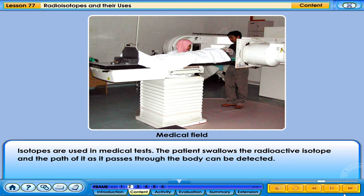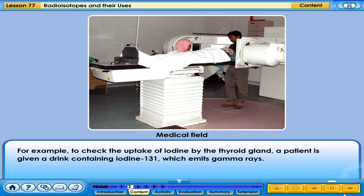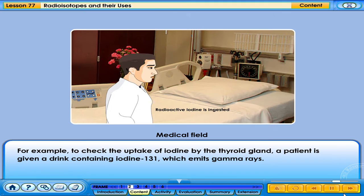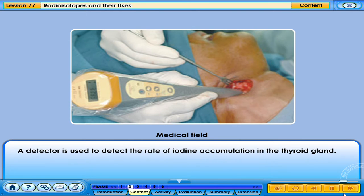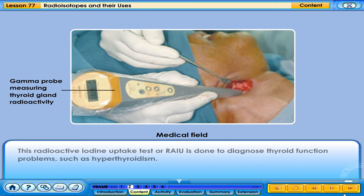Although radiation damages both cancer cells and normal cells, the normal cells are able to repair themselves and function properly. Isotopes are also used in medical tests — the patient swallows a radioactive isotope and its path through the body can be detected. For example, to check the uptake of iodine by the thyroid gland, a patient is given a drink containing iodine-131, which emits gamma rays. A detector is then used to detect the rate of iodine accumulation in the thyroid gland. This radioactive iodine uptake test, or RAIU, is done to diagnose thyroid function problems such as hyperthyroidism.